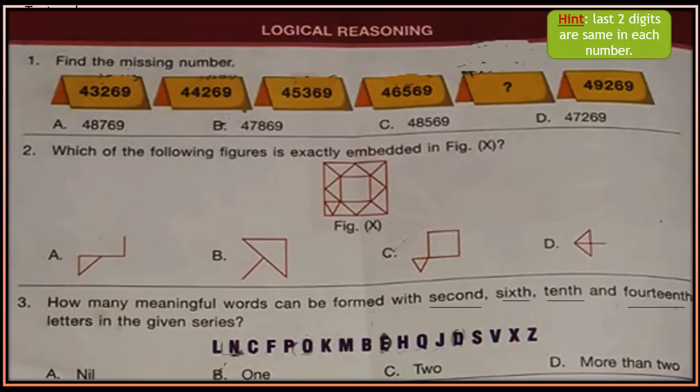Question 1: Find the missing number. Some numbers are given and you have to find the missing number. The hint is that the last two digits are the same in each number. The number is a 5-digit number and the last two digits of each number are the same. Use the hint and try to solve the question.